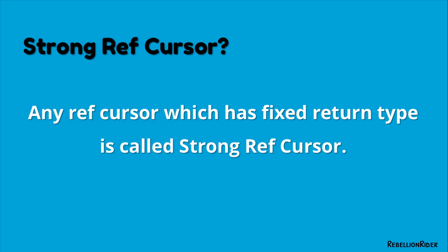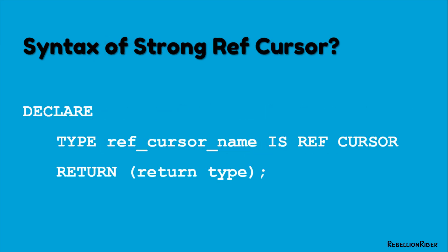Any ref cursor which has a fixed return type is called a strong ref cursor. The return type of a cursor must always be of record type only — it can either be a record structure of a table or a user-defined record structure. You can refer to PL/SQL tutorials 40, 41, and 42 to learn more about record data types in Oracle Database.